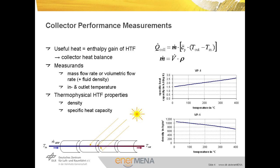The thermal and overall performance of a parabolic trough collector is usually expressed in terms of the useful heat generated by the device. This corresponds to the enthalpy gain of the HTF while flowing through the system. Hence, the useful heat flow rate is calculated from its heat balance. The measurements required to solve the heat balance comprise the mass flow rate or volumetric flow rate and fluid temperature, as well as the temperatures at the inlet and outlet of the unit.